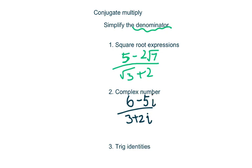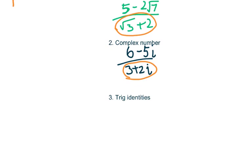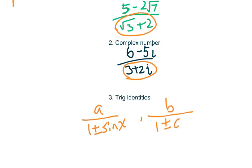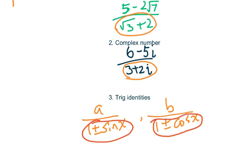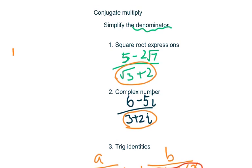When your denominator has this pattern, you have to use conjugate multiplication to simplify. And for trig identities, we have something like a over 1 plus or minus sine x, and b is 1 plus or minus cosine x. You have to use conjugate multiplication to simplify the denominator. Basically, conjugate multiply: we call a plus or minus b, and its conjugate will be a minus or plus b.